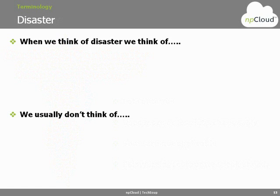Let's start with the big one: disaster. What does a disaster mean for your organization? Responses from attendees include data loss, fire, flood, natural disaster, can't access your data, loss of facility. A lot of these are natural disaster related — things you have no control over, like your entire building burning down or your server crashing.